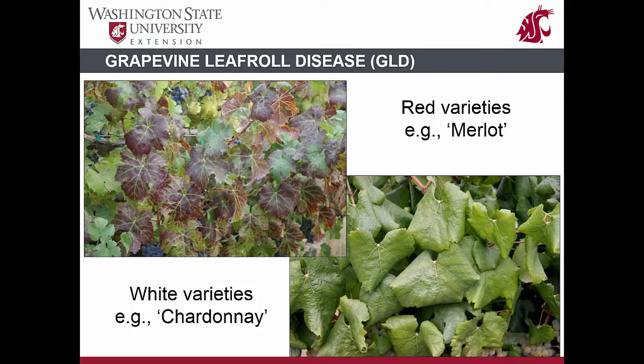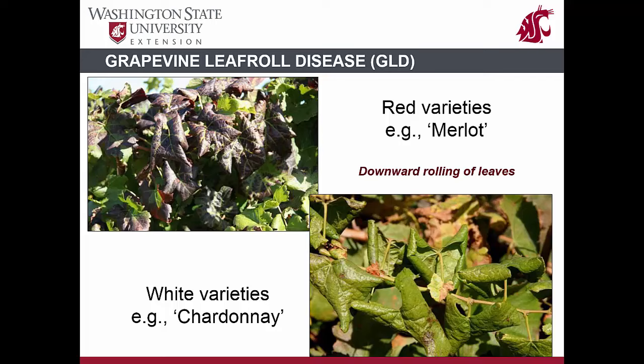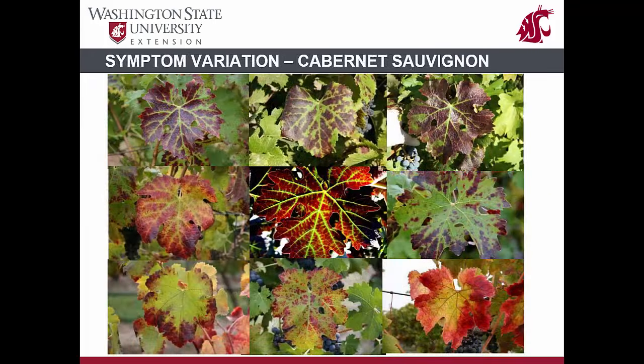In contrast, white-fruited cultivars like Chardonnay may show mild chlorosis or yellowing due to infection with leaf roll disease, especially in advanced stages towards the end of the season. Infected leaves in both red and white-fruited cultivars show downward rolling of leaf margins — this symptom is the namesake of the disease. These symptoms tend to be more pronounced during cooler seasons.